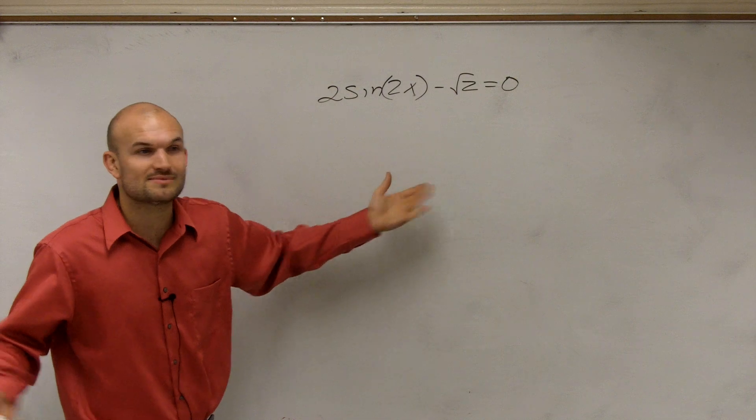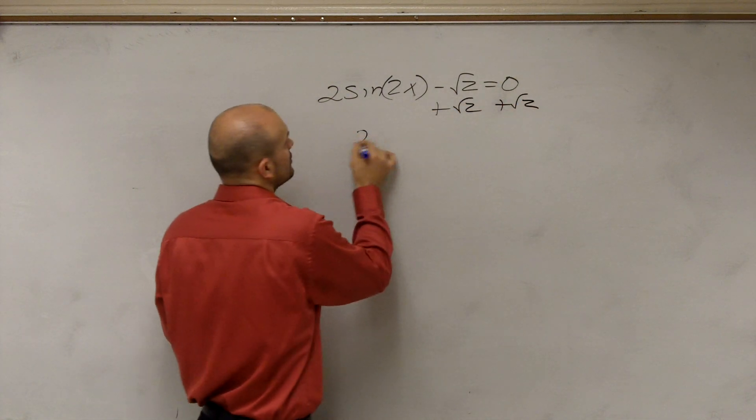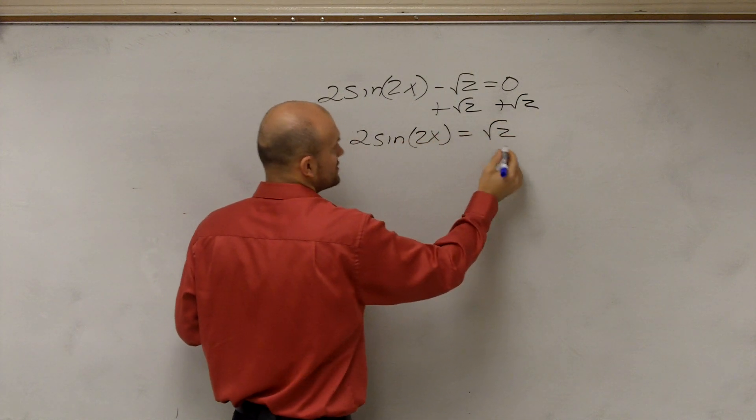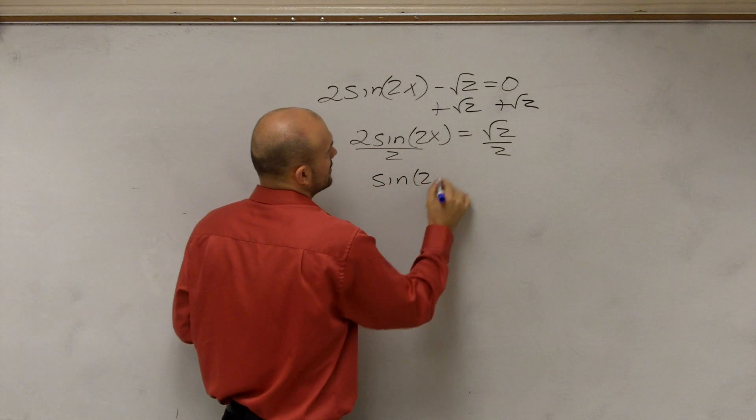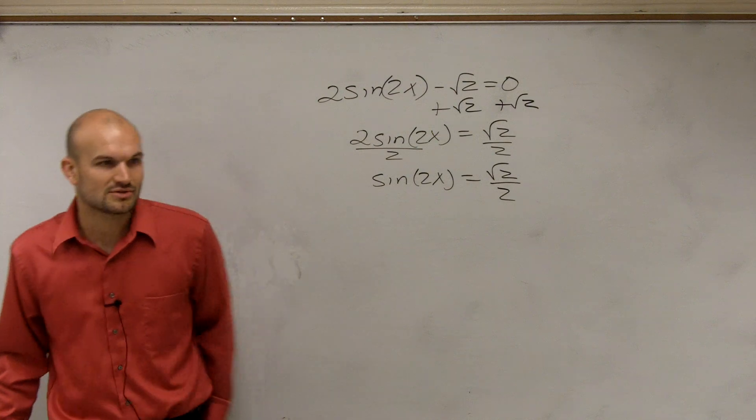we're going to follow the same steps. Add square root of 2 to sine of 2x equals the square root of 2. Divide by 2. Sine of 2x equals the square root of 2 over 2. And now what's the most common mistake?